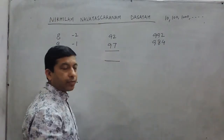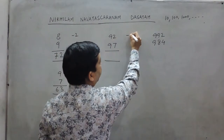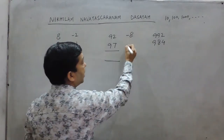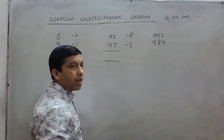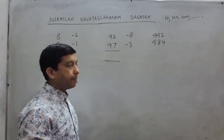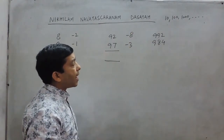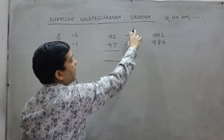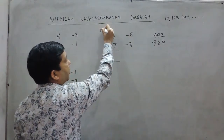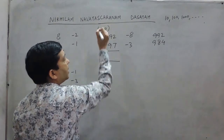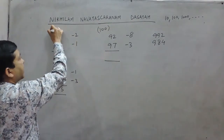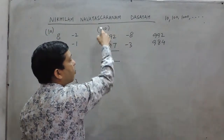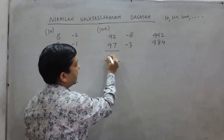Now we take the same concept and go to two-digit numbers. The difference between 100 and 92 is 8, and the difference between 100 and 97 is 3. Now if we add 8 and 3, we get 11. We have to subtract this 11 from 100 because we have taken the base to be 100, just as we took the base as 10 before. If we subtract 11 from 100, it becomes 89.